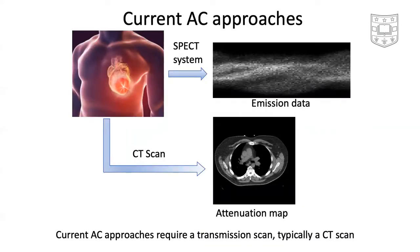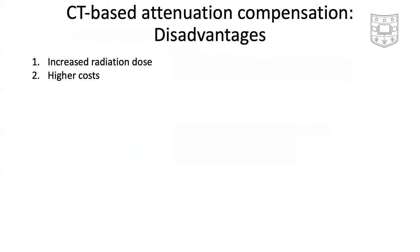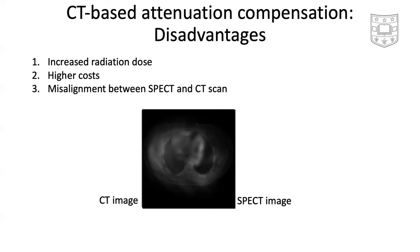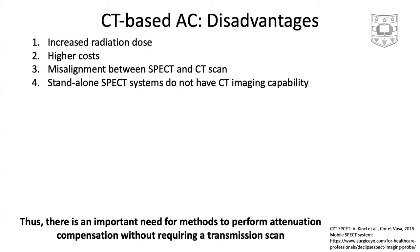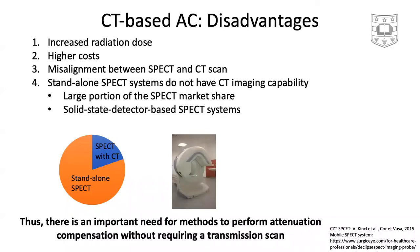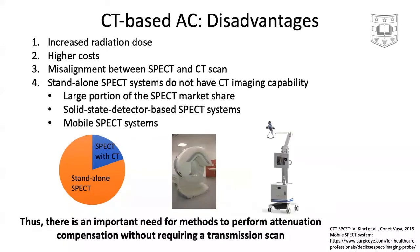Performing attenuation compensation requires the availability of an attenuation map of the patient. This attenuation map is typically obtained by doing a transmission scan, typically a CT scan. This CT-based attenuation compensation method suffers from several disadvantages, including increased radiation dose and higher costs. Further, misalignment between SPECT and CT scans can occur, which leads to inaccurate attenuation compensation. Typically, the CT scan is obtained with a SPECT/CT system. However, a large portion of SPECT's market share is occupied by standalone SPECT systems where a transmission scan is unavailable. Moreover, several emerging solid-state detector-based SPECTs, as well as mobile SPECT systems, do not have CT imaging capabilities.